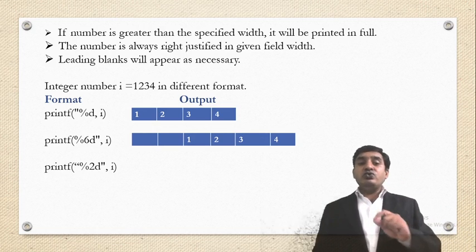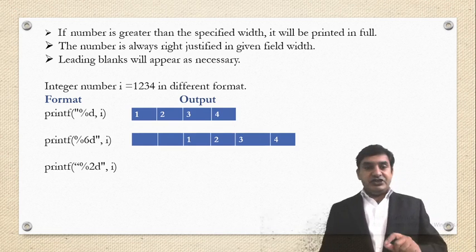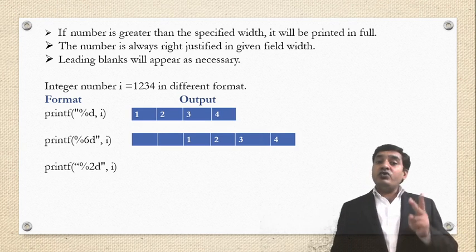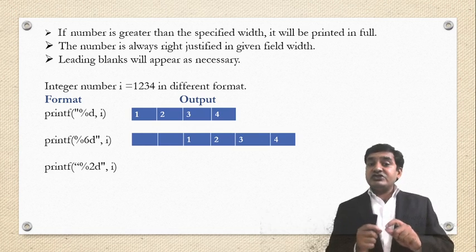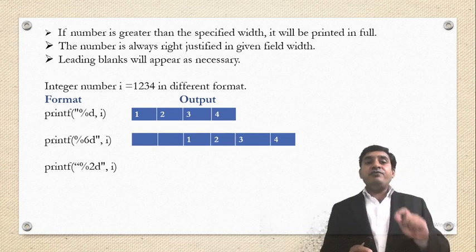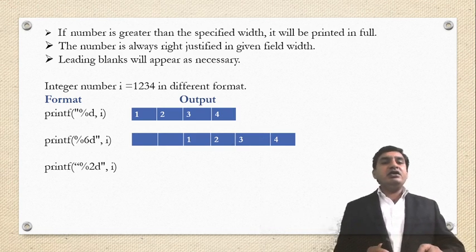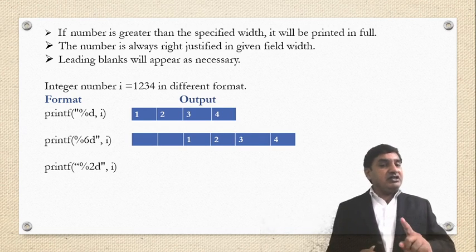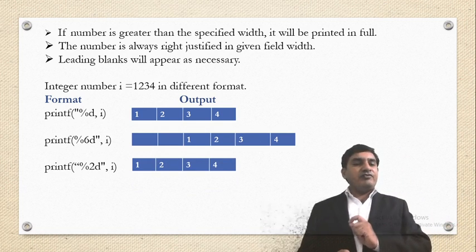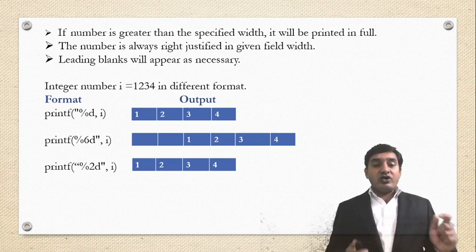With printf("%2d", i), the width is only 2, but our number is 1234 which has 4 digits. Since the number is greater than the specified width, it will be printed in full. So the width 2 is not considered and the output is 1234 using 4 blocks.